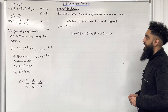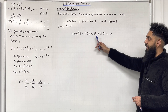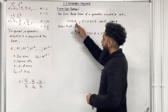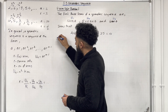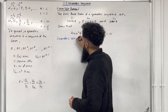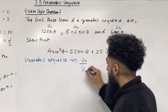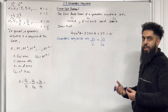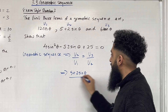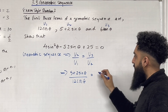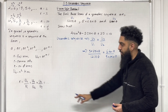Exam style question 2: the first three terms of a geometric sequence are 12cosθ, (5 + 2sinθ), and 6tanθ. Show that 4sin²θ − 52sinθ + 25 = 0. U₁ = 12cosθ, U₂ = 5 + 2sinθ, U₃ = 6tanθ. Since this is a geometric sequence, there is a common ratio between consecutive terms, so U₂/U₁ = U₃/U₂, meaning (5 + 2sinθ)/(12cosθ) = (6tanθ)/(5 + 2sinθ).